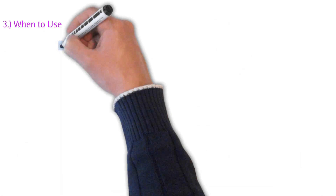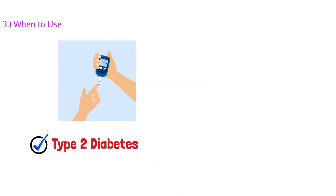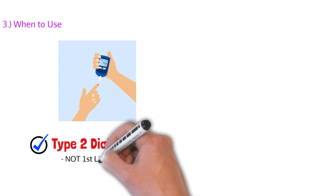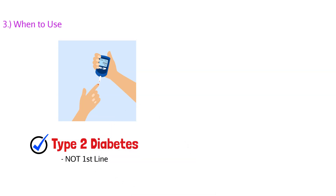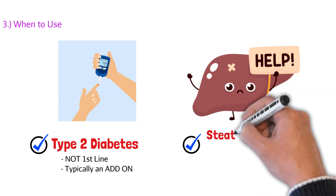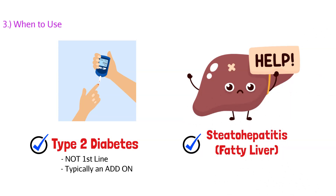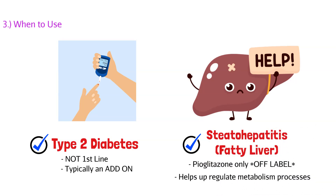Now that we understand how TZDs work, when do we use them? They only work in our type 2 diabetic population — they do not work in type 1, only type 2 because of that insulin resistance issue. TZDs are not a first-line agent; that's reserved for metformin, which we talked about in our previous video. This is typically more of an add-on agent. Interestingly, pioglitazone can be used for steatohepatitis, also known as fatty liver — this is an off-label indication. But 90% of the time, it's going to be used for type 2 diabetic patients.